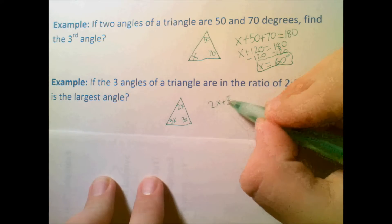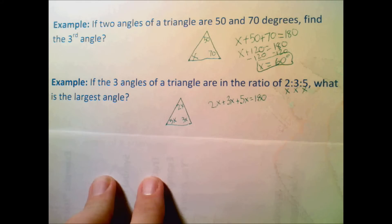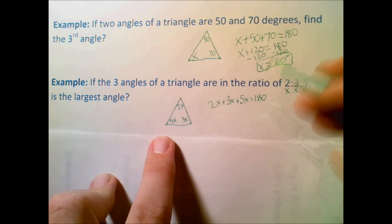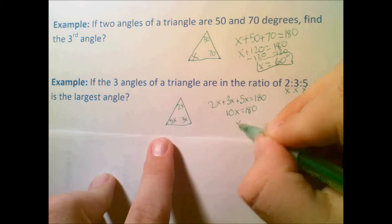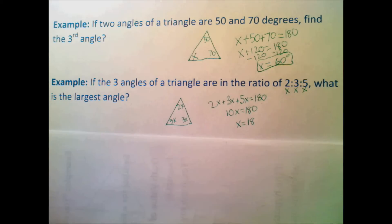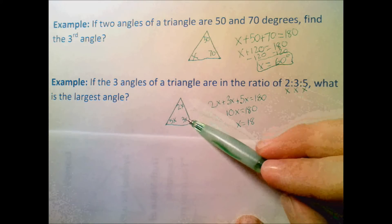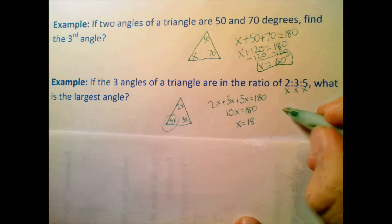So I get 2X plus 3X plus 5X is equal to 180 degrees. We add up all three angles equals 180. I get 10X equals 180 degrees, and X is equal to 18. Now, be careful. This question is asking what is the largest angle. Out of the three angles I have here, 2X, 3X, and 5X, the one that's going to be biggest is the 5X. So we're going to plug in 5 times 18, which was our X value, and we'll get our final result of 90 degrees.